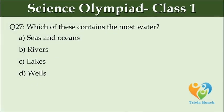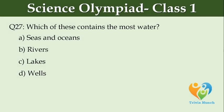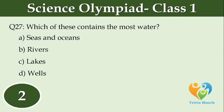Which of these contains the most water? Option A: Seas and oceans. Option B: Rivers. Option C: Lakes. Option D: Cells.